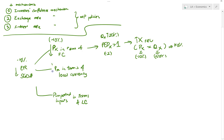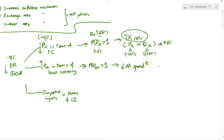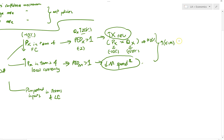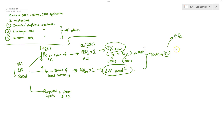Similarly, when the exchange rate goes down, the price of imports in terms of SGD becomes more expensive. Assuming PdM is more than one, this leads to a decrease in import spending. The combined effect of an increase in export revenue and a decrease in import spending leads to an increase in net exports. You then link this to AD, and from there to actual growth, a decrease in cyclical unemployment, and an improvement of your trade balance.